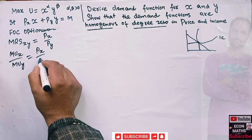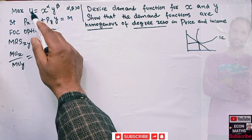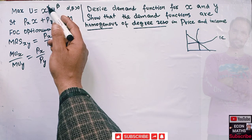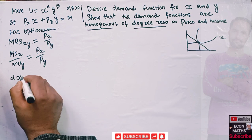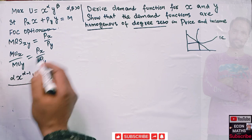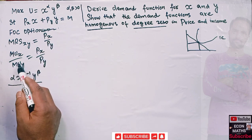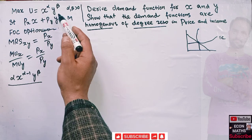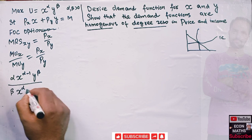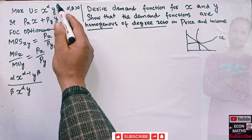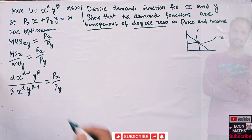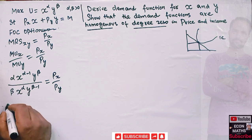So the MRS, which is marginal utility of x divided by marginal utility of y, should equal price of x divided by price of y. Marginal utility of x means taking the derivative of the utility function with respect to x, so alpha becomes the coefficient and we get alpha * x^(α-1) * y^β. Similarly, marginal utility of y means the derivative with respect to y, giving x^α * beta * y^(β-1). This should equal Px/Py.